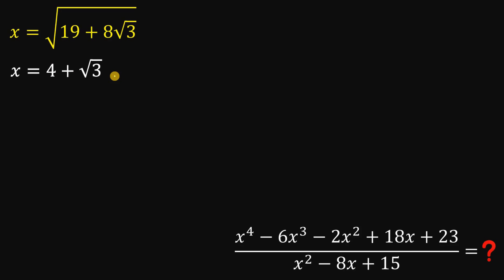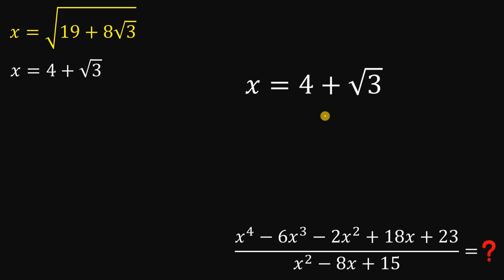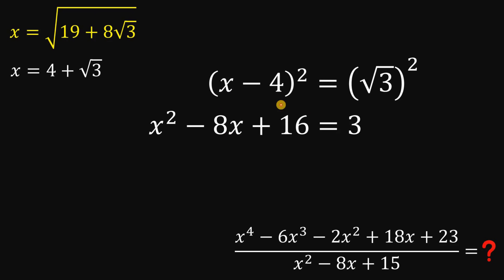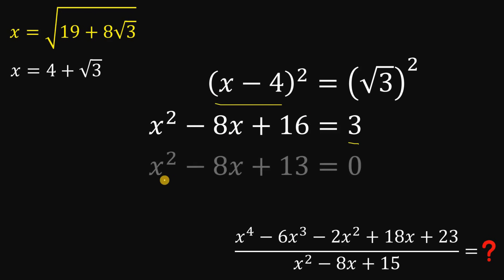Now the question is how this value helps us evaluate the expression. From x equals 4 plus square root of 3, we subtract 4 on both sides, then square both sides. We get x squared minus 8x plus 16 on the left and 3 on the right. Subtracting 3 from both sides gives us x squared minus 8x plus 13 equals 0.